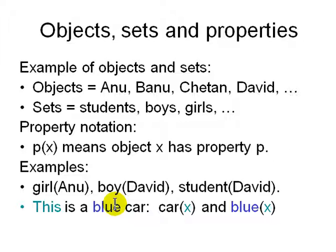For example, 'this is a blue car' can be written as: x stands for this, car(x) and blue(x). So this allows us to write complicated English sentences in logical format using propositional logic and sets.